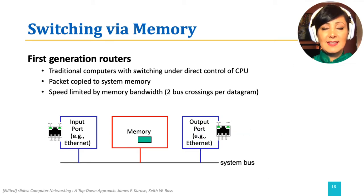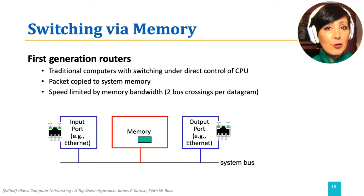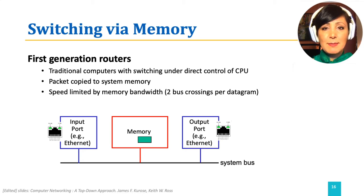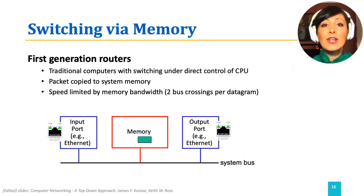In this method, if the memory bandwidth limits reads and writes of packets to B packets per second, the forwarding throughput would be at most B divided by two packets per second. This is because the packet must be read to and from memory — once going from the input port to memory, and once going from memory to the output port.